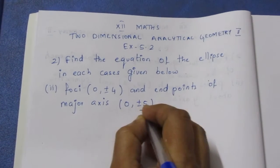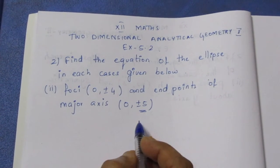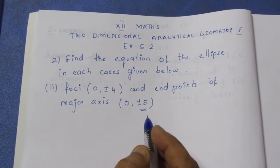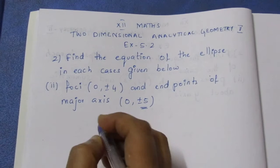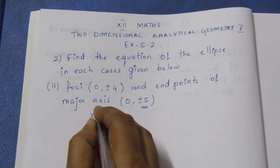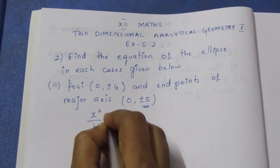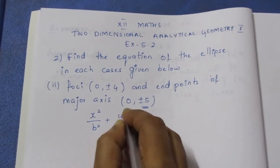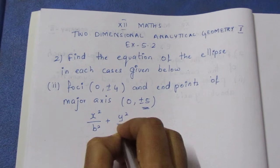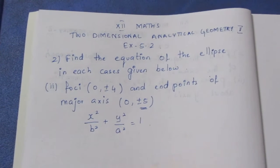Looking at the major axis, the number is on the y-axis. So since the number is on the y-axis, the formula becomes x² by b² plus y² by a² equal to 1.